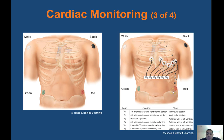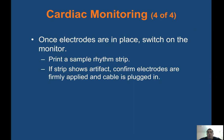Tell patients to hold real still before hitting the button for a 12-lead — any movement or talking will throw it off, as the monitors are very sensitive. Once electrodes are in place, switch on the monitor and print a sample rhythm strip. If the strip shows artifact, confirm electrodes are firmly applied, the cable is plugged in, and the patient is not moving. Any touching of cables will throw artifact into your rhythm.